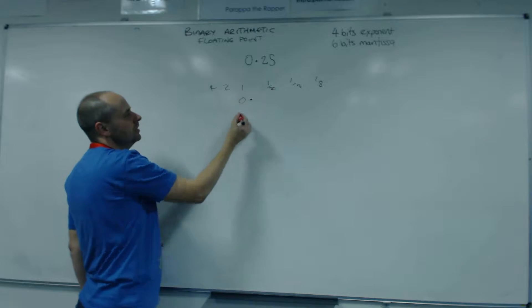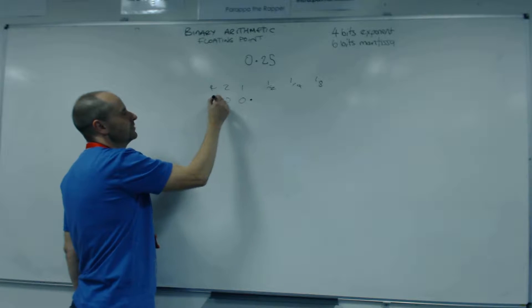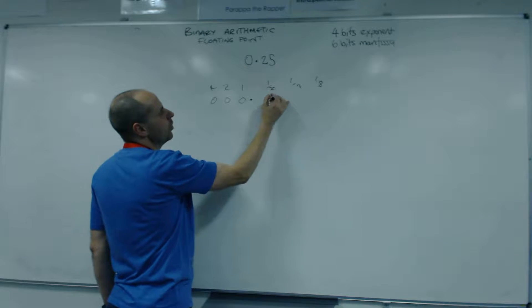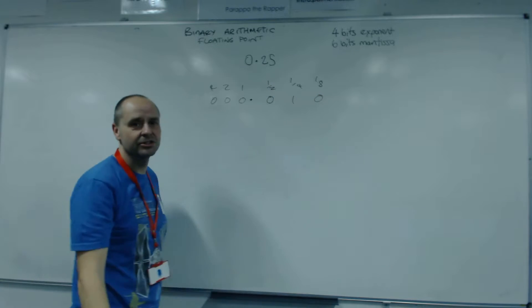So to write down a quarter, we're going to make it positive. Let's just fill all the big positions in. And then we want a quarter. Well, that one's nice and easy to write, so it should look like that.